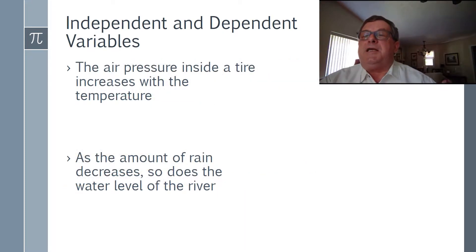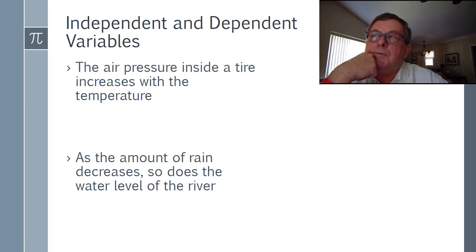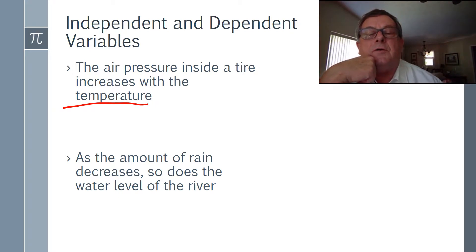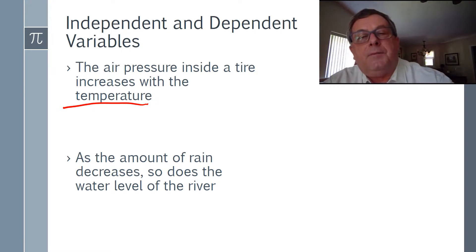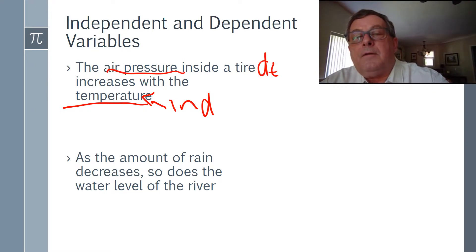Let's look at some examples of finding the independent and dependent variables. The first one: the air pressure inside a tire increases with temperature. What causes the air pressure to increase? It's the temperature. So temperature is the independent variable, and the air pressure inside the tire is the dependent variable.